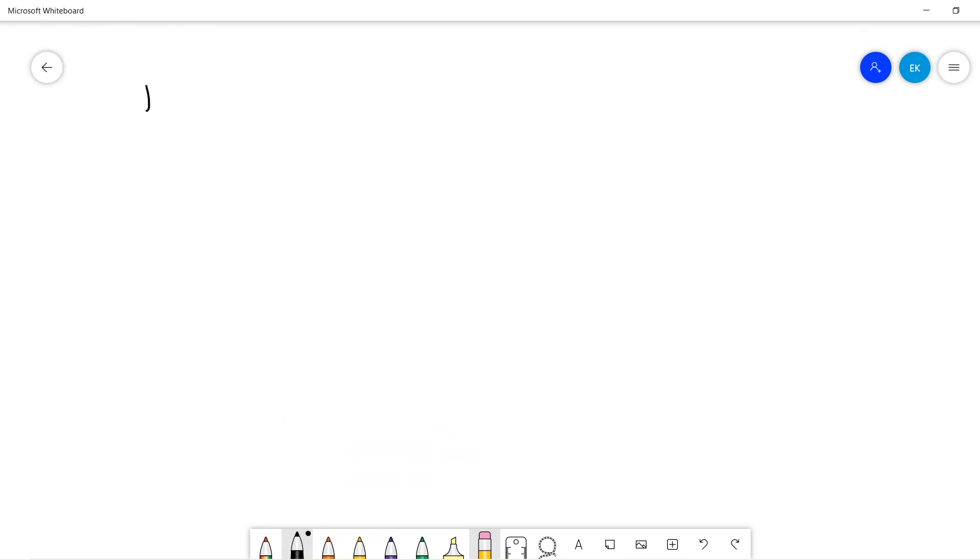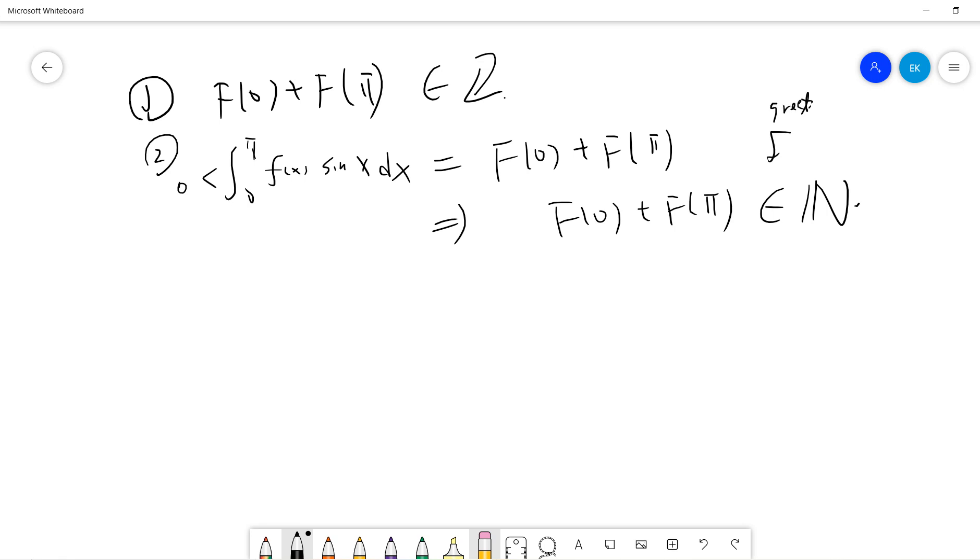The first result: F(0) plus F(π) is an integer. The second result tells us that this special integral equals F(0) plus F(π). And the third result tells us that this is greater than 0. So F(0) and F(π) should be a natural number, so it's some positive integer greater than 0.